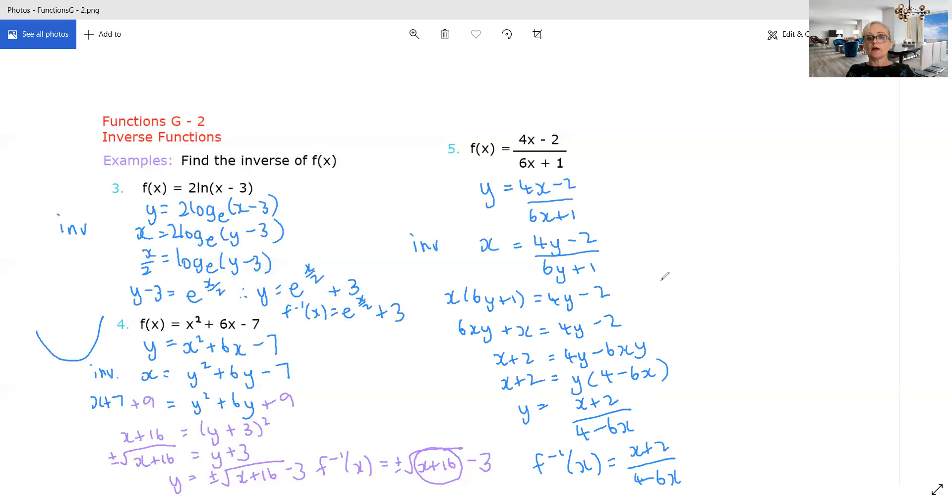So just bear in mind that procedure there. Don't let it phase you. It's not terribly difficult, but some people get a bit confused as to how to get the y on its own. This is the way to do it. Get all your y's on the one side. Take out your y as a common factor and then divide through.